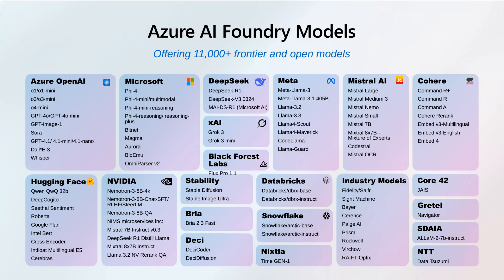Azure AI Foundry's model catalog provides access to over 11,000 frontier AI models from partners like DeepSeek, Mistral, Meta, and HuggingFace. It offers advanced search and filtering capabilities, allowing developers to find models by industry or task quickly. Performance, safety, and cost leaderboards help evaluate options, while users can test custom evaluations on their data. The platform supports affordable hosting and fine-tuning in a developer tier, handles local deployment through Foundry Local, and one powerful demo showed podcast transcription optimization that dramatically cut transcription costs.